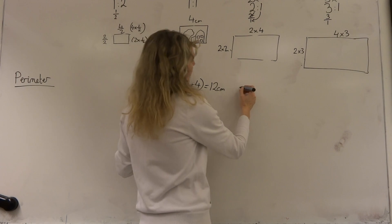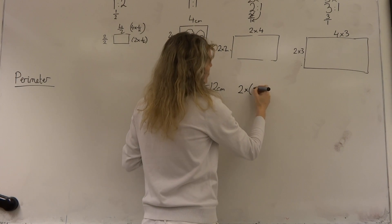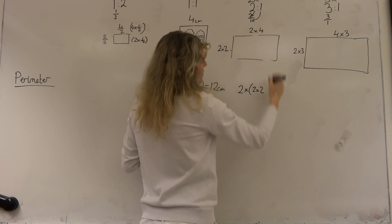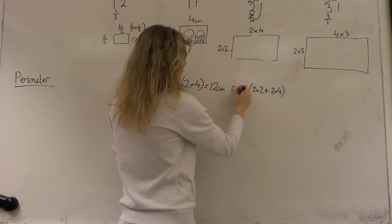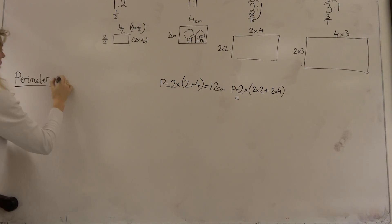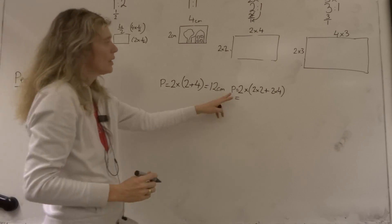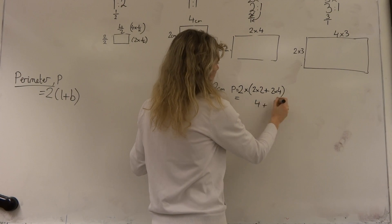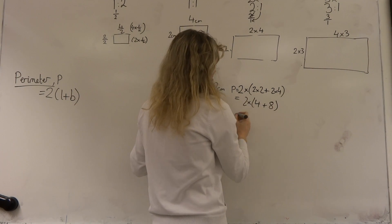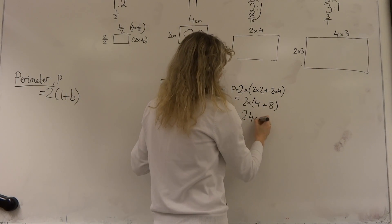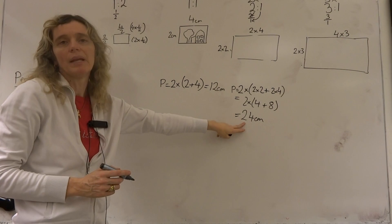In the one that we have here, we have half twice. This one is two times two plus the breadth two times four. This gives us the perimeter — P equals two times length plus breadth. We get four plus eight, two times, so we get eight plus four, twelve — twenty-four centimetres. So in this case, when we were doubling the length and the breadth, we end up doubling the perimeter as well.